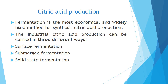Sucrose is first converted into glucose, glucose into pyruvate, and pyruvate into citric acid. Fermentation is the most economic and widely used method for citric acid production. Industrial production of citric acid follows three different fermentation processes: surface fermentation, submerged fermentation, and solid-state fermentation.